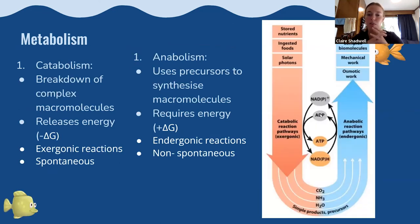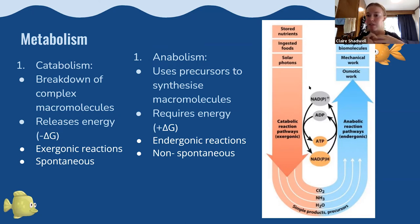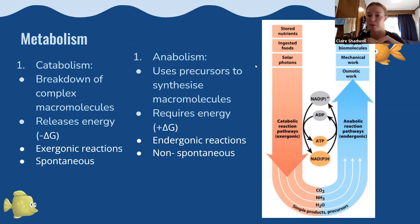Catabolism is the breakdown of complex macromolecules — big molecules with lots of bonds. When these bonds are broken, they release energy, making these exergonic reactions that occur spontaneously with a lower activation energy. Anabolism, on the other hand, involves small molecules joining together, requiring energy to form bonds — these are not spontaneous because there is a higher activation energy.